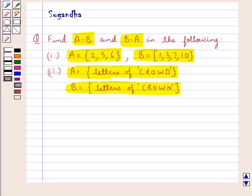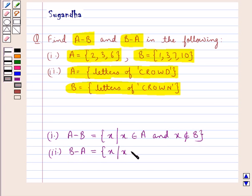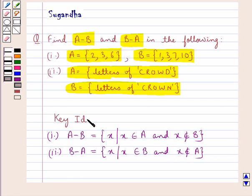Before we move on to the solution, let's see what is the difference of two sets A and B. First, A minus B is the set containing the element X such that X belongs to set A and X does not belong to set B. Then B minus A is the set containing the element X such that X belongs to set B and X does not belong to set A. This is the key idea that we would use for this question.